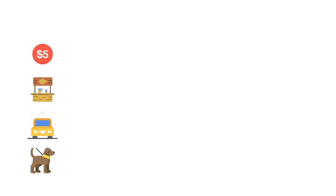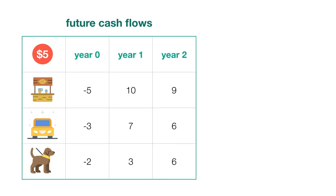For instance, suppose I have an allowance of $5. I could use the money to put on a lemonade stand, run a car wash, or start a dog walking business. The initial cost of each is $5 for the lemonade stand, $3 for the car wash, or $2 for the dog walking business. My future cash flows are summarized in this table, and my personal discount rate is 4%. Pause the video and see if you can decide which project or projects I should invest my limited funds into.